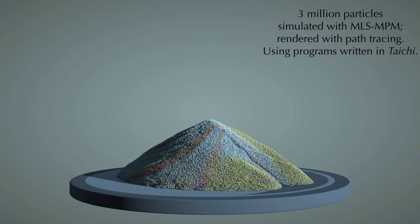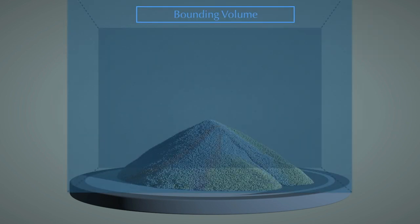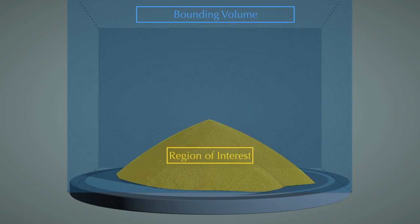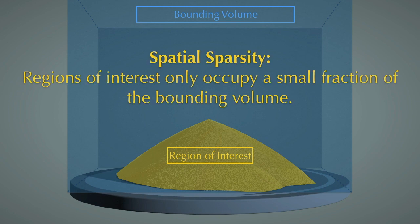Usually, graphics programmers will allocate a huge bounding volume to represent the simulation domain. However, the computation only happens in a tiny part of this huge bounding box. We call this spatial sparsity, which means regions of interest only occupy a small fraction of the bounding volume.